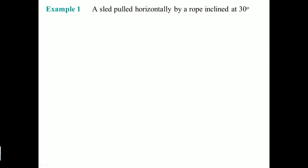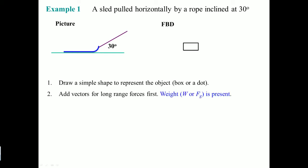A sled is being pulled by a rope inclined at 30 degrees. If we don't tell you, it's from the ground. Here's the picture. Please draw a simple shape to represent the object—a dot or a box will do. Add vectors for long range forces, that's going to be your weight or force of gravity, which is the same thing, and we know that is always pointing down.